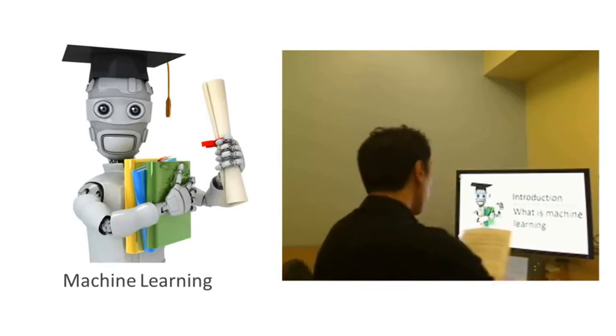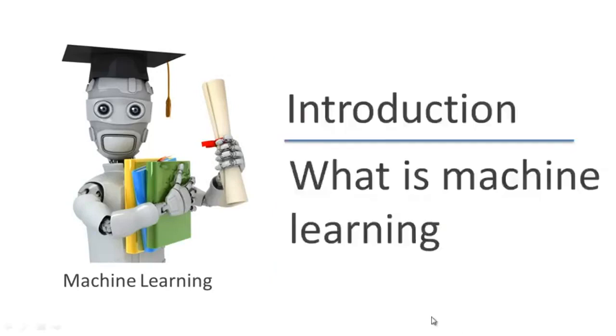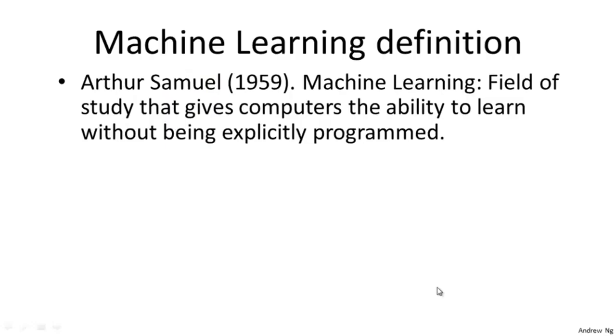Here's the definition of machine learning that is due to Arthur Samuel. He defined machine learning as the field of study that gives computers the ability to learn without being explicitly programmed.